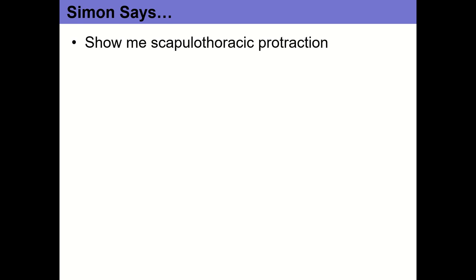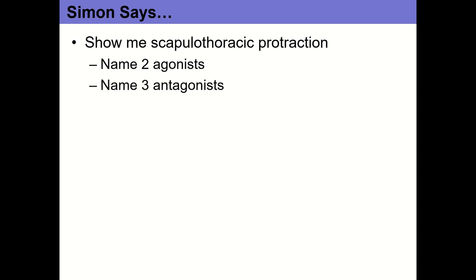Show me scapulothoracic protraction — sliding the scapulas anteriorly. Two agonists: pec minor and serratus anterior. Three antagonists — the retractors: rhomboid major, rhomboid minor, and trapezius sections two, three, and four.